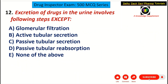Coming to the 12th question: excretion of drugs in the urine involves the following steps except — Choice A: glomerular filtration, Choice B: active tubular secretion, Choice C: passive tubular secretion, Choice D: passive tubular reabsorption, Choice E: none of the above. Excretion of drugs in the urine is also called renal excretion.